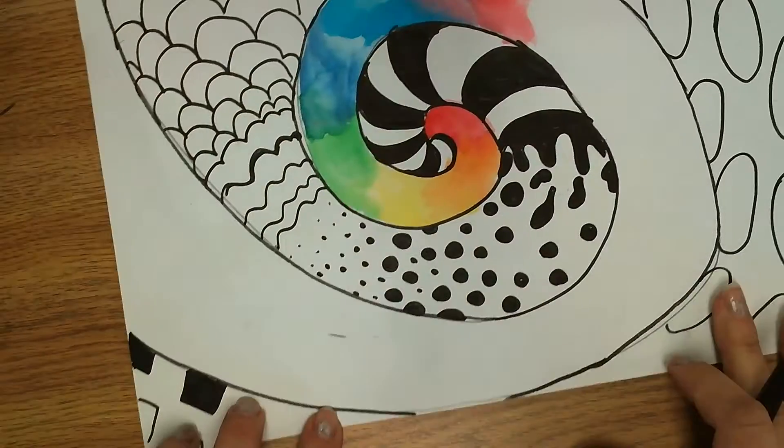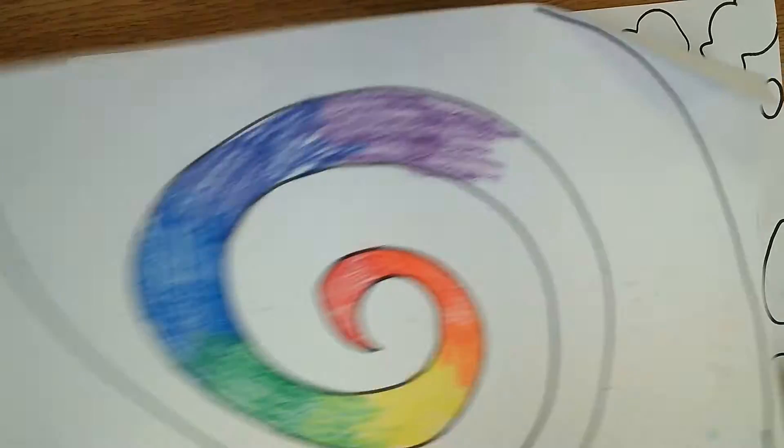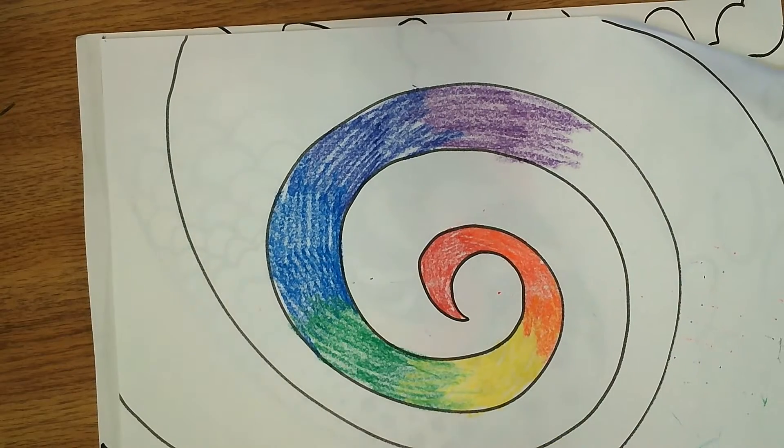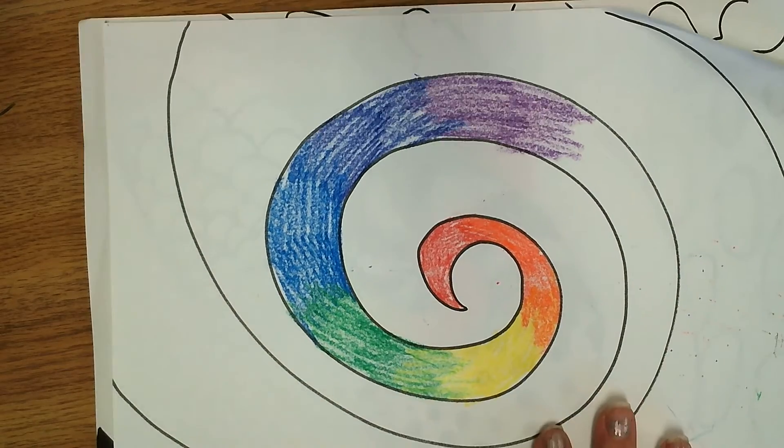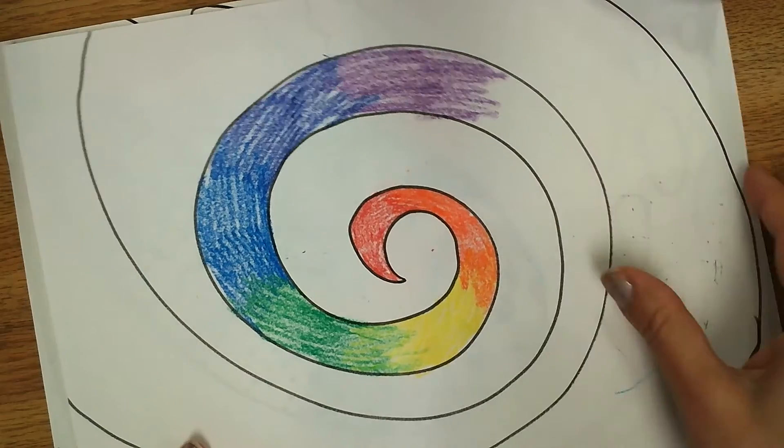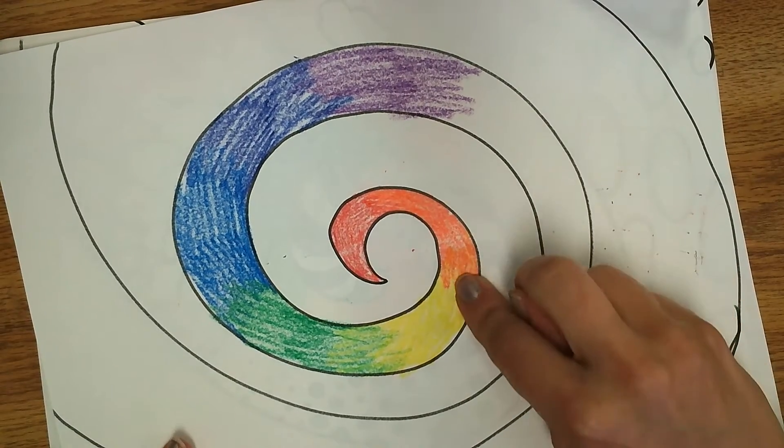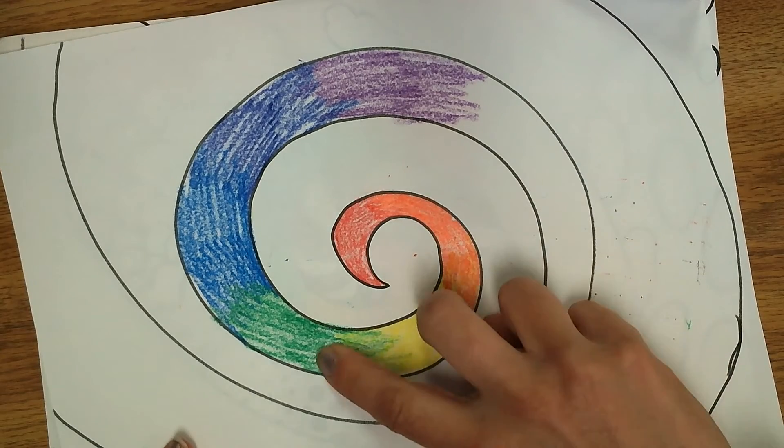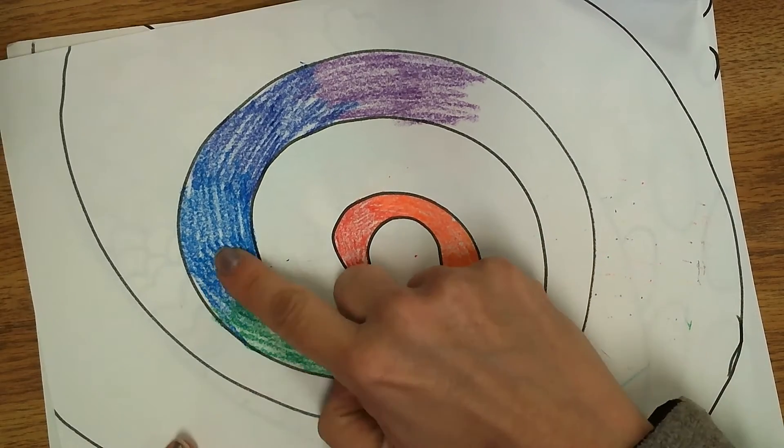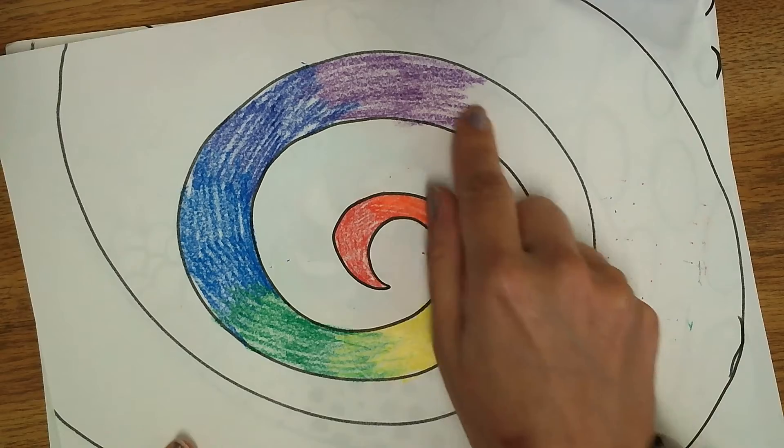Also those of you that are not in class, here's another one where I started in crayon. So if you don't have paint, hopefully you have crayons or colored pencils and you just do the same thing as I did with the paint. You do red, orange, yellow, green, blue, indigo, and violet.